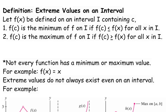Not every function has a minimum or a maximum value. For example, f of x equals x — if we're not talking about a particular interval, f of x equals x doesn't have a maximum or minimum because it increases in one direction and decreases in another. Now if we zoom in on an interval we can talk about it having a maximum or minimum, but just over its entire domain we can't.